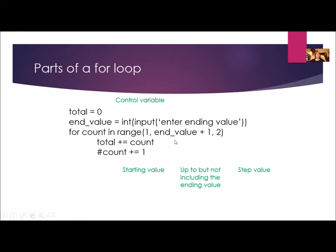Remember the parts of a for loop: your control variable — which can be 'count', 'i', 'n', 'c', or whatever — your starting value, your ending value, and your step value. You don't have to have a starting value if you only want the ending value, but if you include a step value, you must also include a starting value, because the step value has to be the third argument.